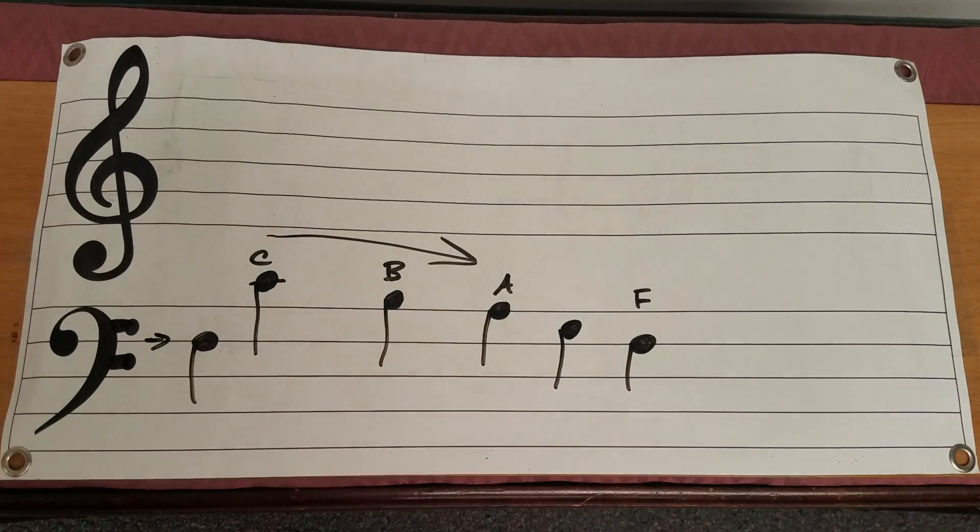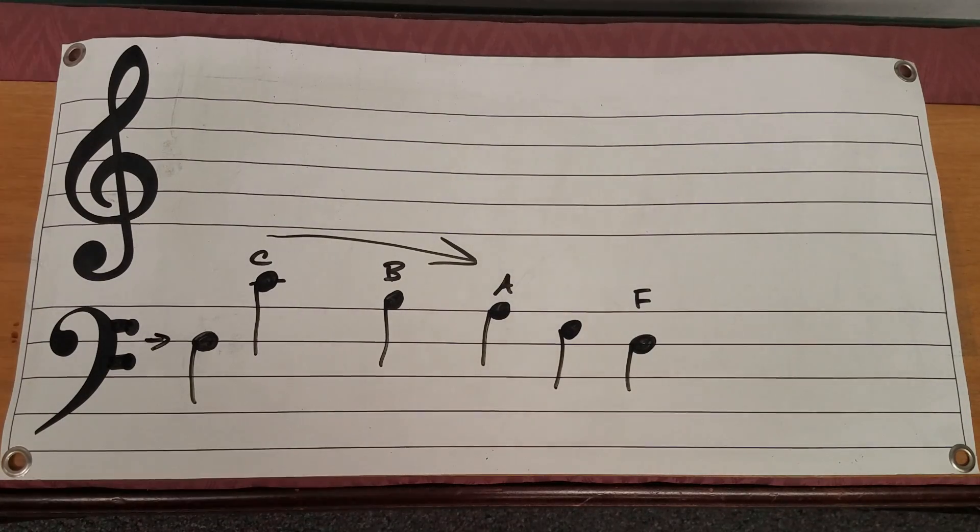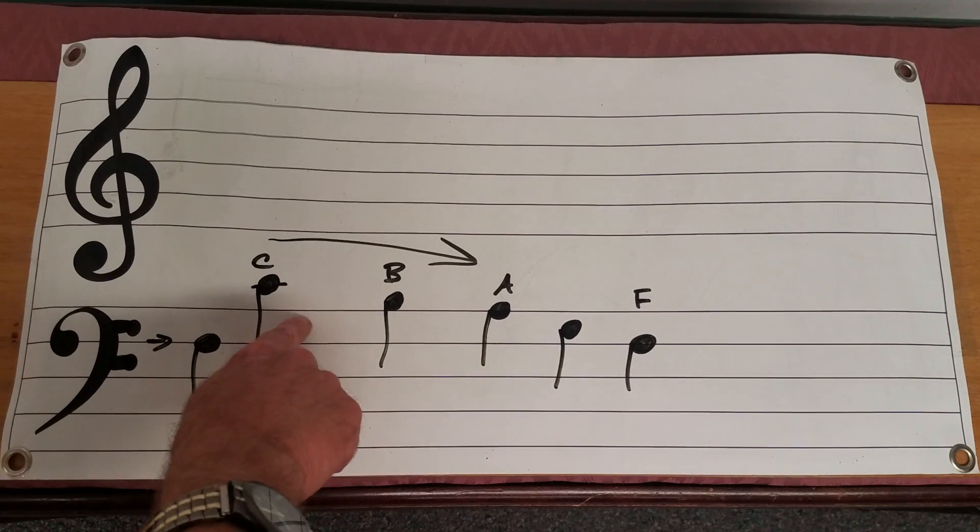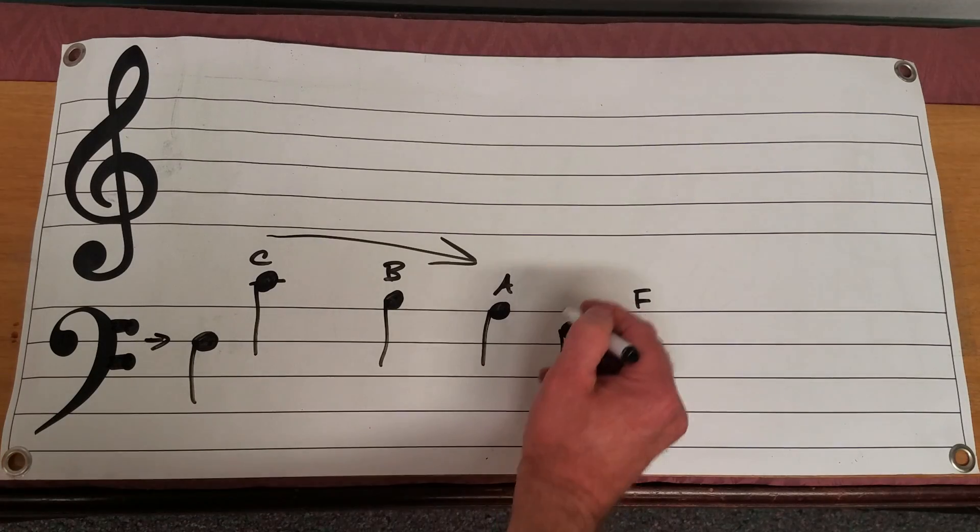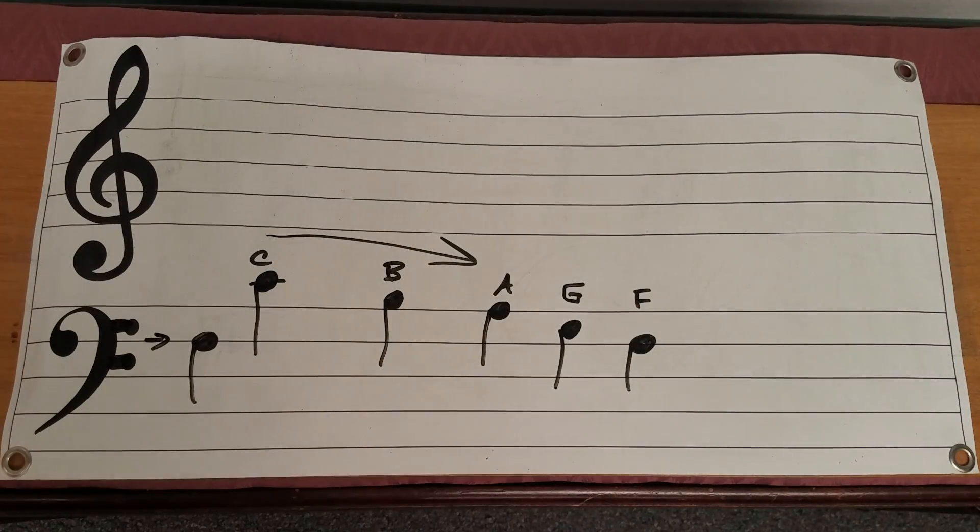And this one's interesting because remember as I was saying we have A, B, C, D, E, F, G. That's our musical alphabet. Instead of A to Z like it is in English, it's A to G. And you'll notice this is going backwards. So if we're going backwards before A is going to be a G. There it is.